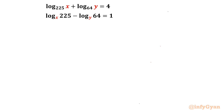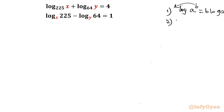We will use properties of logarithms. Let me write the properties I'll use here. Property 1: the exponent b in log a to the power b comes down as a multiplier. Property 2: log a base b equals 1 over log b base a.